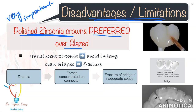Even if you want to give a glazed restoration, make sure that the zirconia underneath the glazed layer is polished, because the glazed layer has a tendency to wear off over time. Also, if you adjust the zirconia crown, make sure that you polish it again or send it back to the lab and get it polished. If you cement the crown without polishing, it will definitely lead to abrasion of the opposing dentition.